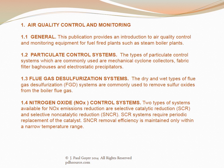The types of particulate control systems which are commonly used are mechanical cyclone collectors, fabric filter bag houses, and electrostatic precipitators. The dry and wet methods of flue gas desulfurization, abbreviated FGD — a heads up that due to the complexity of the terminology, many abbreviations are used. FGD systems are commonly used to remove sulfur oxides from the boiler flue gas.